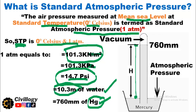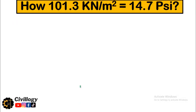Now that we understand the basic meaning of standard atmospheric pressure, let's go towards the conversion — how 101.3 kilonewton per square meter equals 14.7 psi.